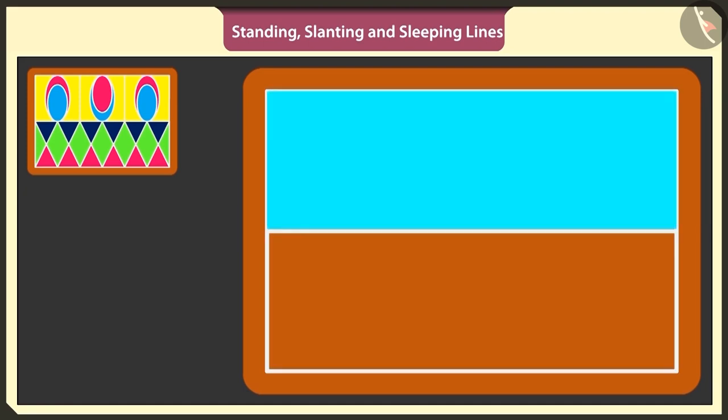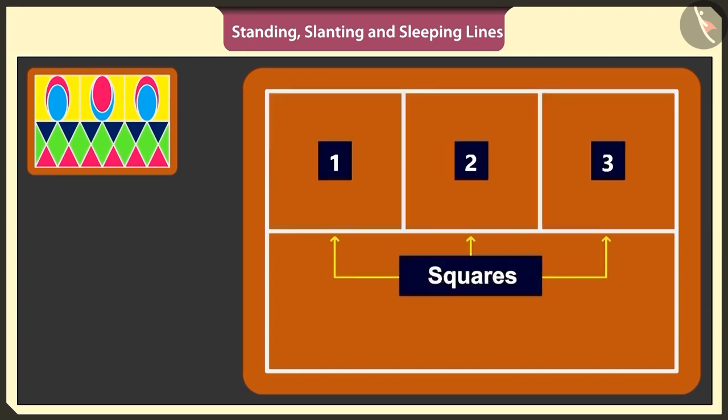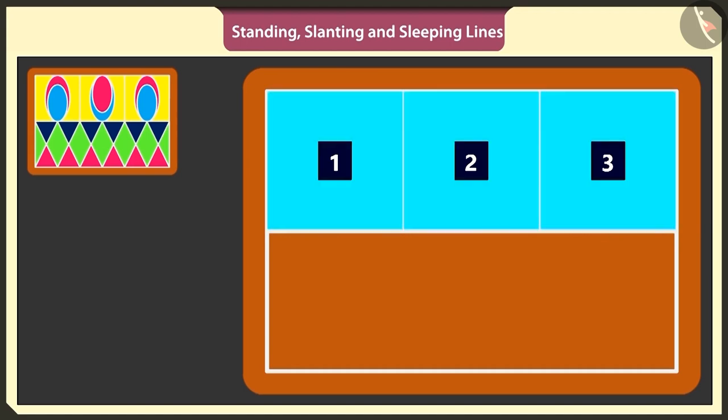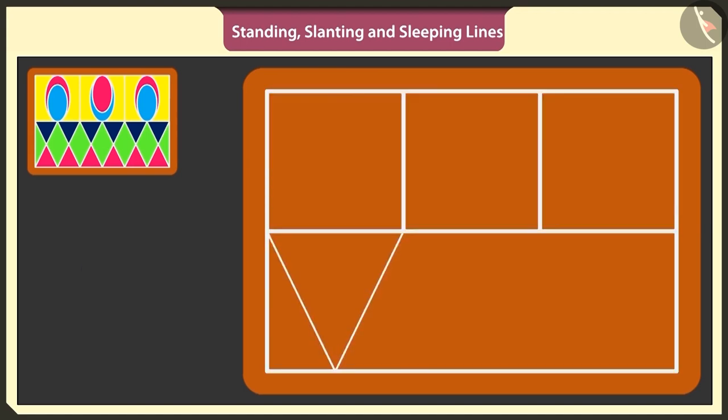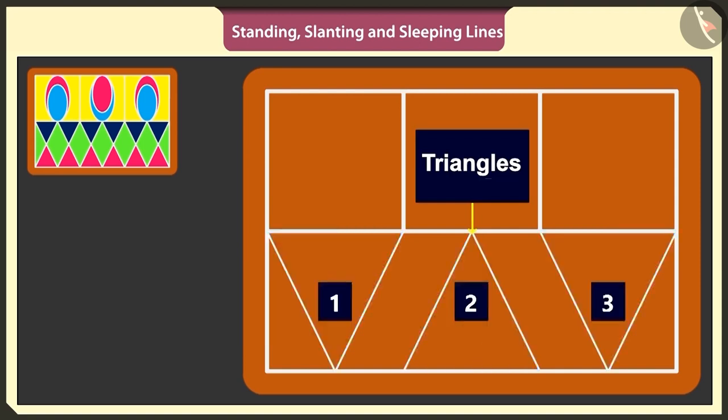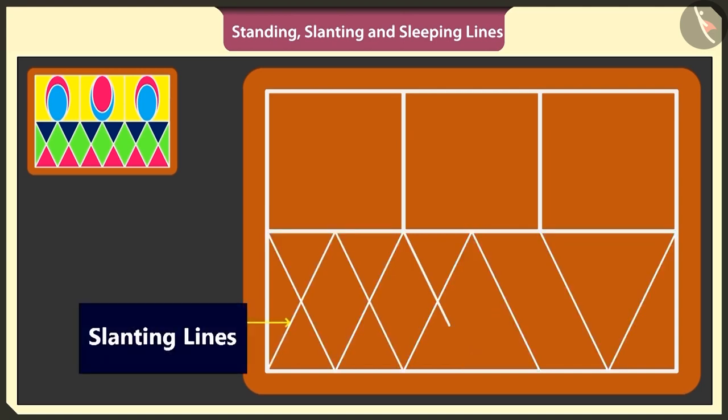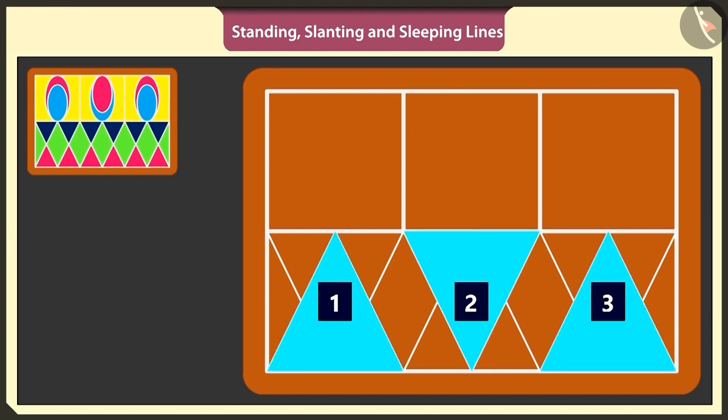Draw two standing lines in the above rectangle and make three such small squares. Now under these three squares, I will draw three triangles, just like this. I will use slanting lines to make inverted triangles, just like this.